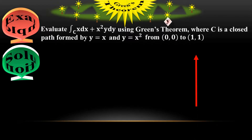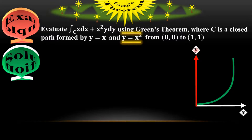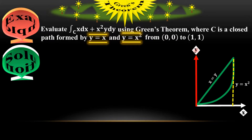Solution. Let me draw the xy-plane here. The curve C ranges from y equals x squared up to y equals x. The region goes from origin (0,0) to point (1,1), where x equals 1 and y equals 1, because x equals y at that intersection point.